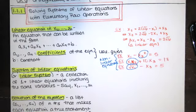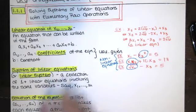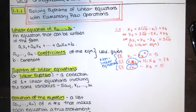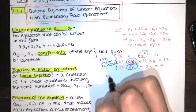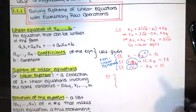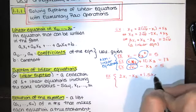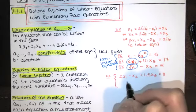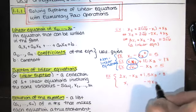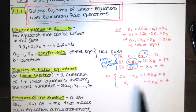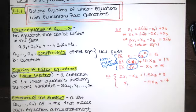A system of linear equations, also known as a linear system, is just a collection of one or more linear equations involving the same variables X₁ through Xₙ. For example, from the Lay textbook: 2X₁ − X₂ + 1.5X₃ = 8 and X₁ − 4X₃ = −7. Since these two equations involve the variables X₁, X₂, and X₃, that is a system of two equations and three unknowns.